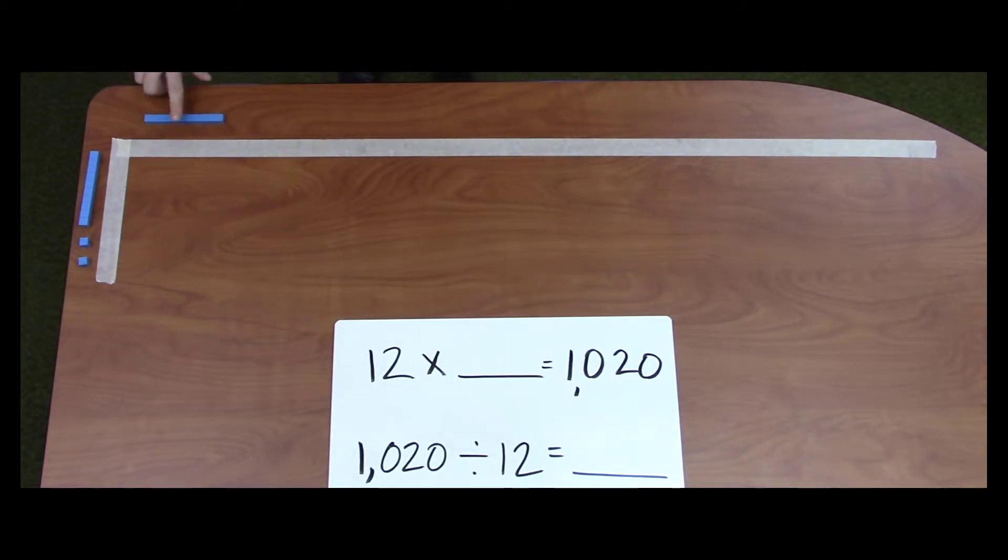I know that 10 times 12 equals 120. I can place the 10 rod at the top to represent 10, which is part of the missing factor or my answer. 10 times 10 equals 100, so I place the 100s flat. 10 times 1 equals 10. 10 times 1 equals 10. So far, I have 120 as my area.